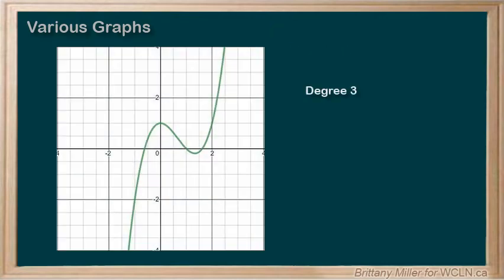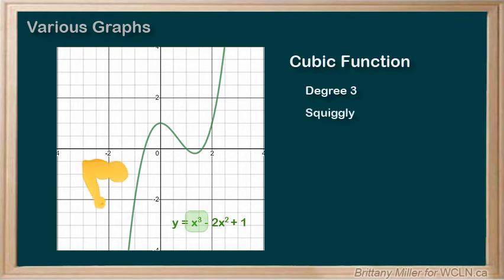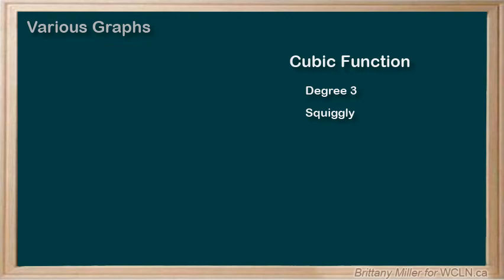Degree 3 gives us a cubic function, like x cubed minus 2x squared plus 1, which is a bit more squiggly in shape. When it's positive, we get the left arm going down and the right arm going up, very similar to a linear relationship. And the negative version is flipped and it goes the other way.